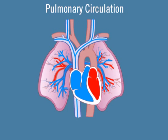Pulmonary capillaries drain into small veins that join to form two pulmonary veins that exit each lung. The four pulmonary veins complete the circuit by delivering freshly oxygenated blood to the left side of the heart for distribution to the tissues.